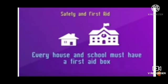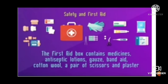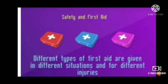So children, in every house and school, there should be a first aid box. First aid box mein hum kuch essential cheezein rakhte hain — for example, medicines, antiseptic lotions, gauze, band-aid, cotton wool, a pair of scissors, and plaster. Lekin yeh dhyan rahe ki medicines should not be expired. Different conditions mein, different accidents mein, hum different type ki first aid provide karte hain.